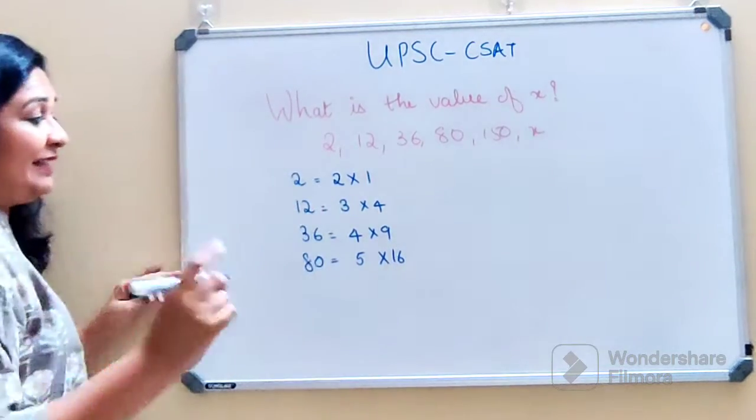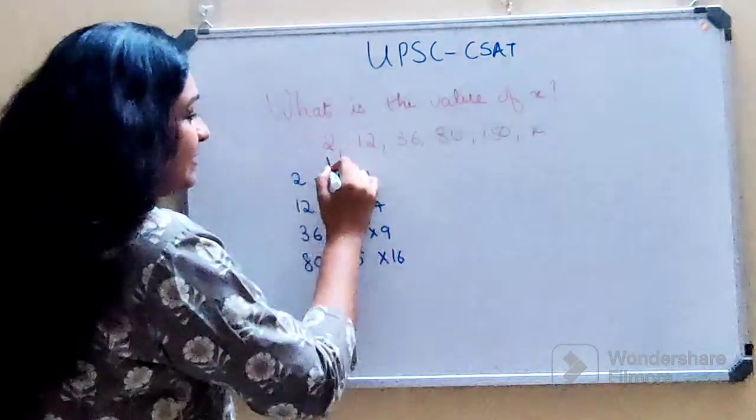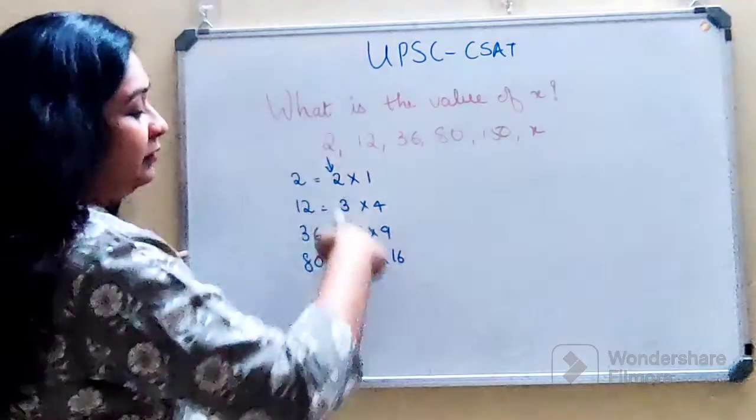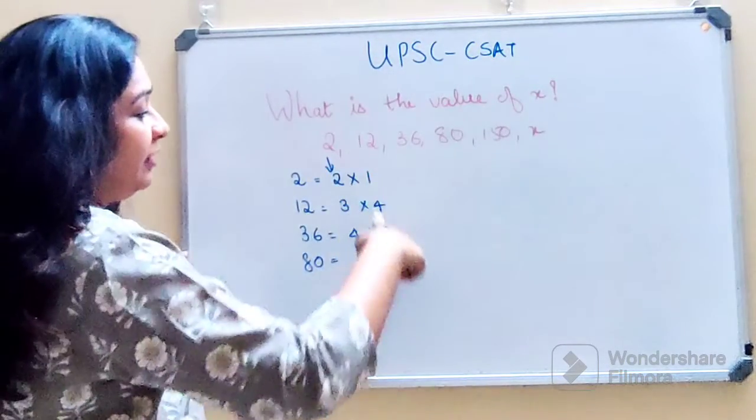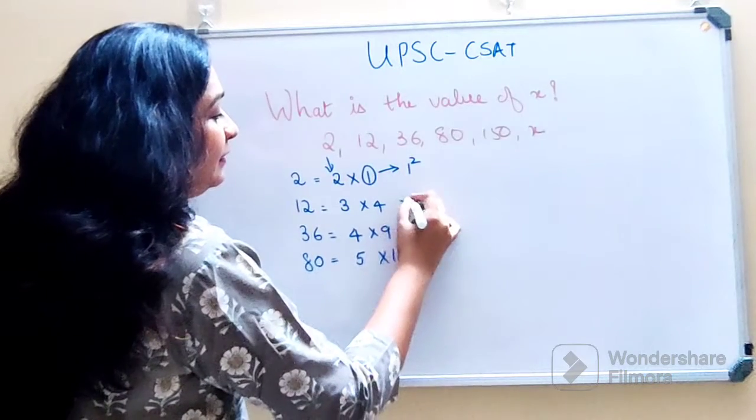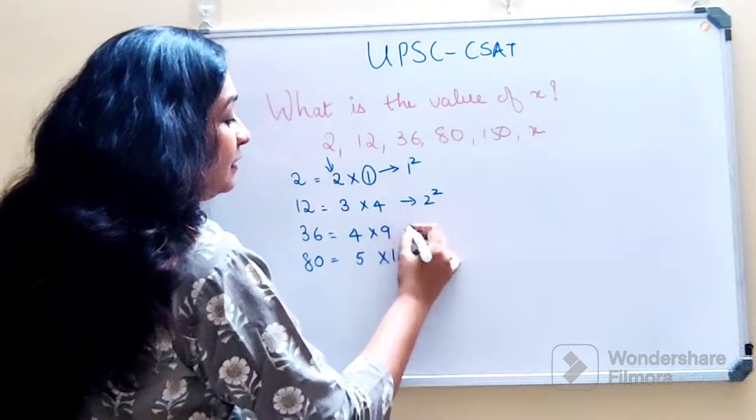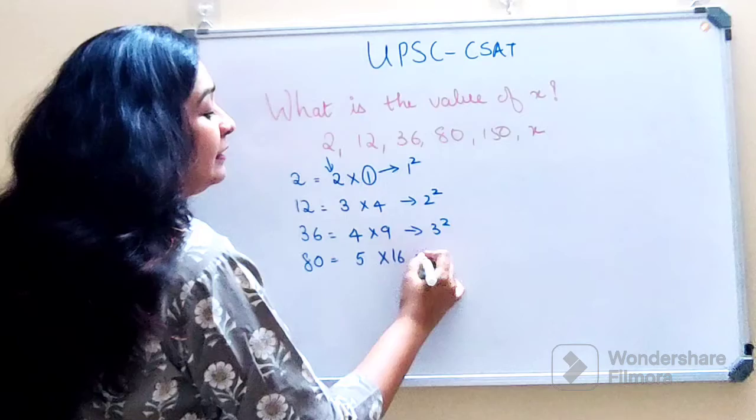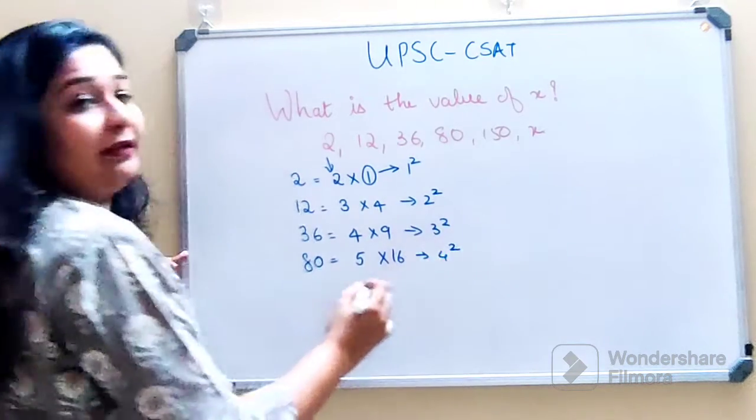Now if you are paying attention, see understand this is done serially. And here I can say this is nothing but 1 square. This is 2 square. This is 3 square. This is 4 square.